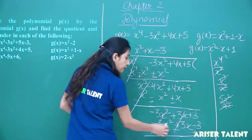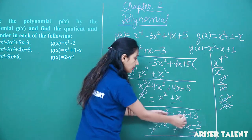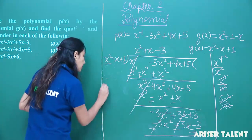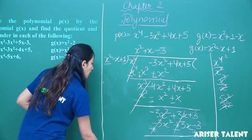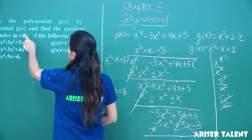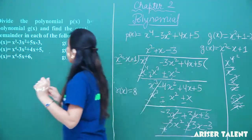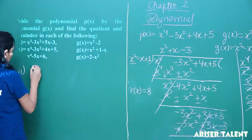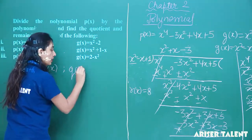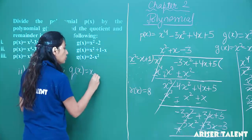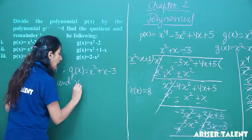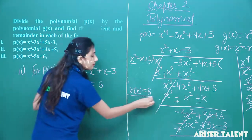In this particular second question, the remainder is completely resolved. Plus 5 plus 3 gives 8. So the remainder r(x) is simply 8. For this question, q(x) equals x squared plus x minus 3, and the remainder r(x) is 8.